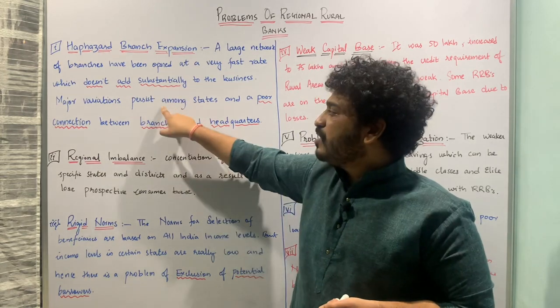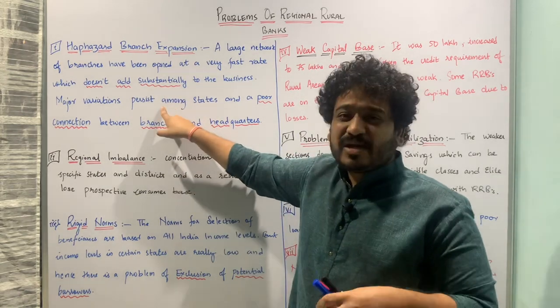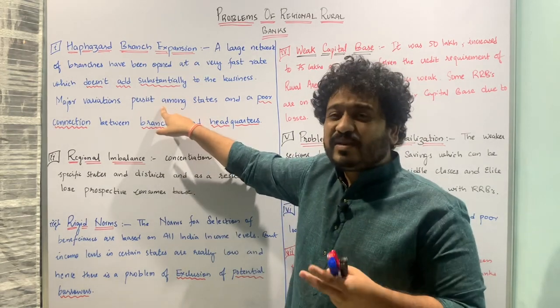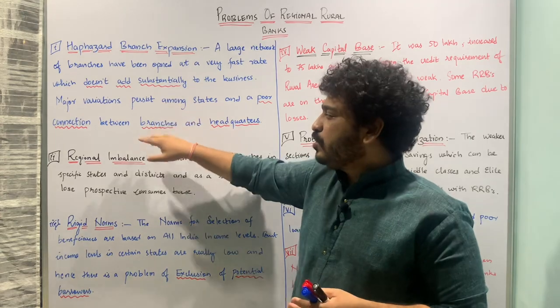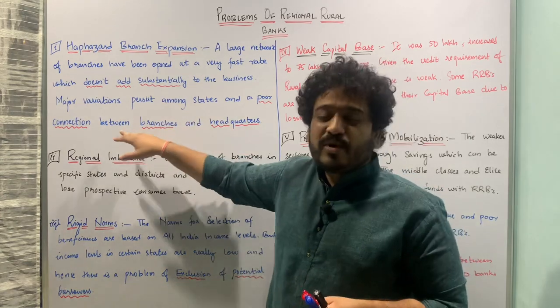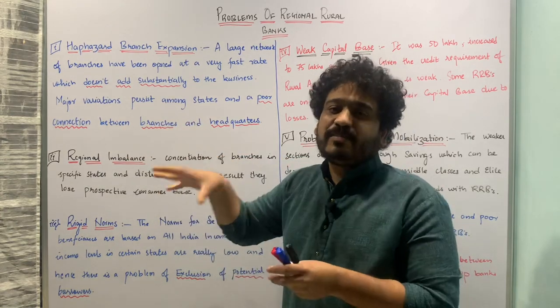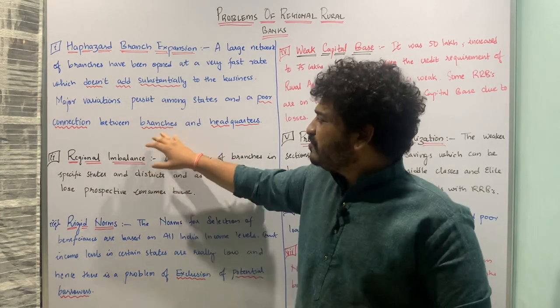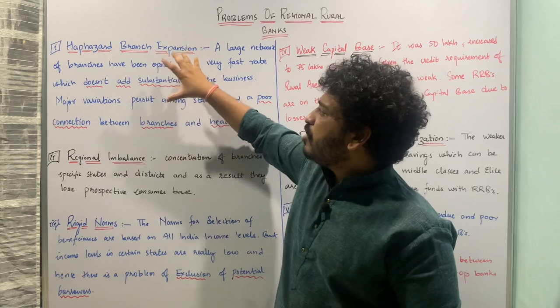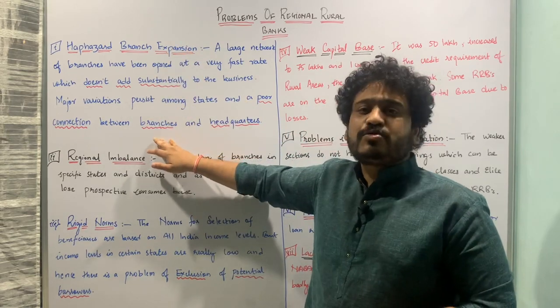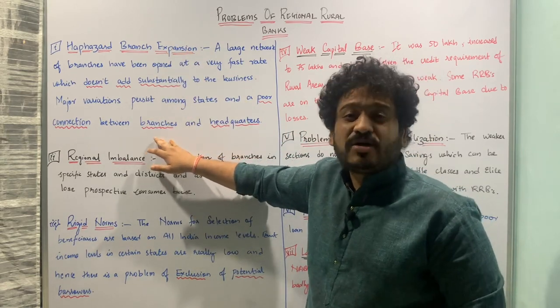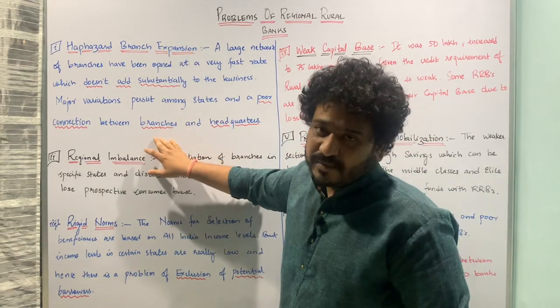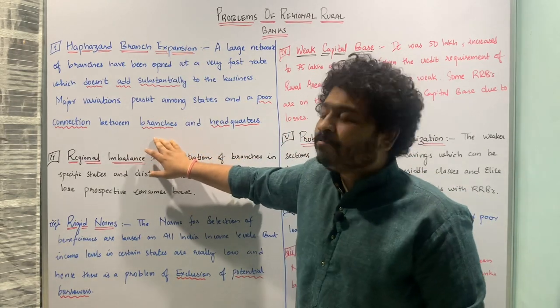So to summarize, the problems of haphazard branch expansion include branches not adding substantially to business, variation among and within states, and poor connection between branches and the headquarters. I hope the first point on problems of regional rural banks is pretty much clear.